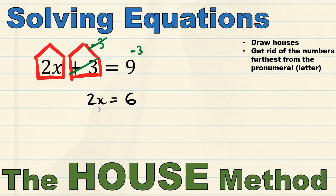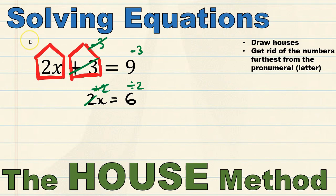We're now left with 2x equals 6. When we are at the point where there is only one operation remaining we don't need to draw houses anymore — we just need to perform the opposite operation. This means 2 times x. The opposite of timesing by 2 is to divide by 2, and we perform this on both sides of the equal sign. This cancels the 2 next to our x, leaving us with simply x on the left, and 6 divided by 2 gives us 3. So x equals 3.